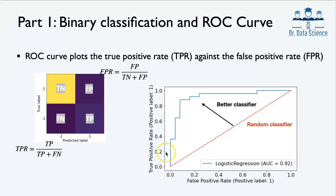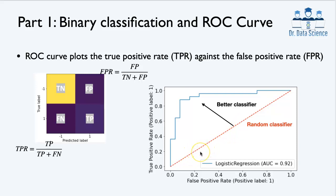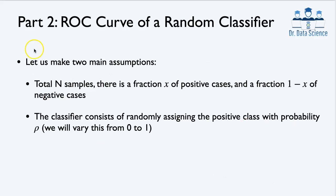The ROC curve plots the true positive rate as a function of false positive rate. It is better to be in the top-left corner where true positive rate is close to 1 and false positive rate is close to 0. The question is: why does a random classifier produce this diagonal 45-degree line showing the trade-off between true positive rate and false positive rate? We are going to prove this in the next slide.